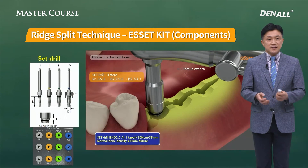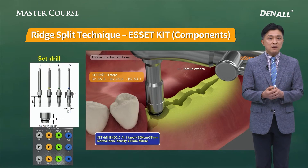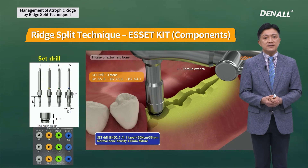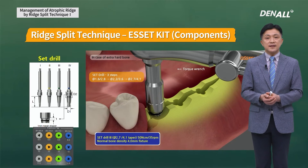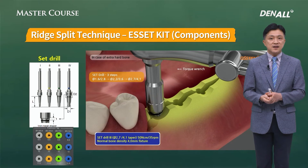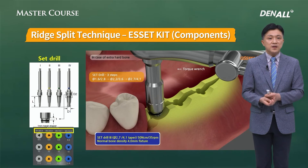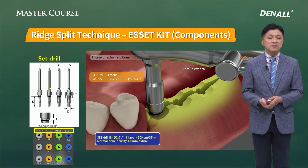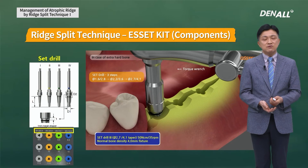The order of using set drills in a distal free-end case: start from the one in the middle, then distal, then mesial. Use the engine at first. In the lower jaw, where ridge split requires more torque, start with the engine and finish with a hand wrench. For placing a 4.0 mm diameter implant, use up to set drill number 3; for a 4.5 mm implant, use up to number 4.